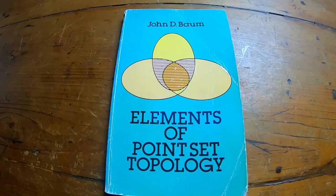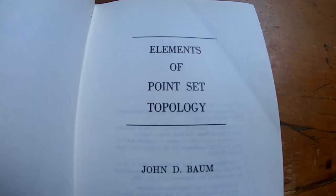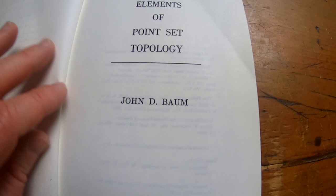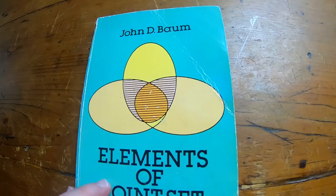Inside cover: Elements of Point Set Topology, John D. Baum, Dover Publications. What that means is it's a reprint of an old book that's out of print, so you can get it really inexpensively like I did. My copy looks old, right? It's been worn and used. That's because I read it a lot.